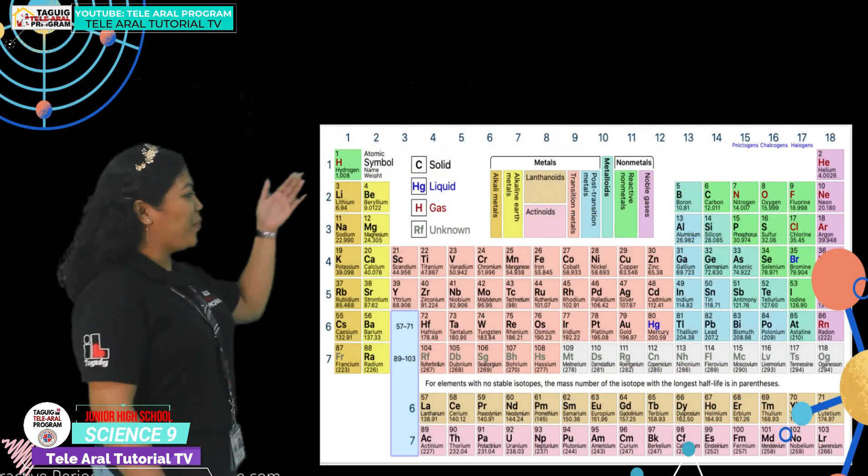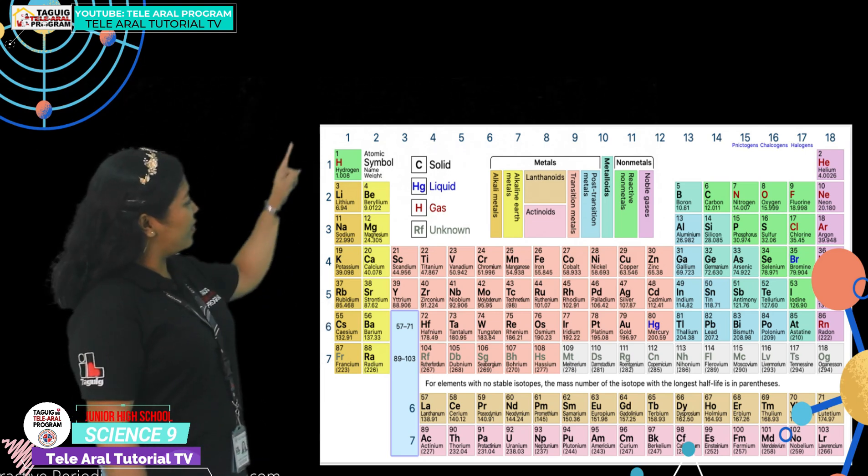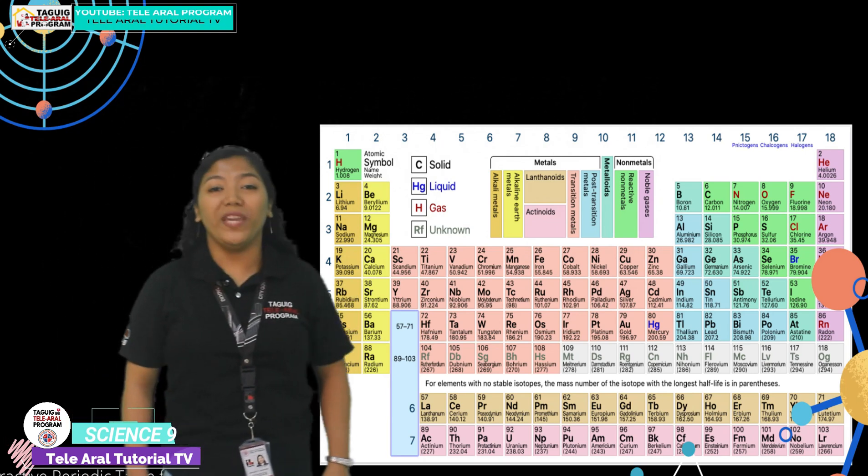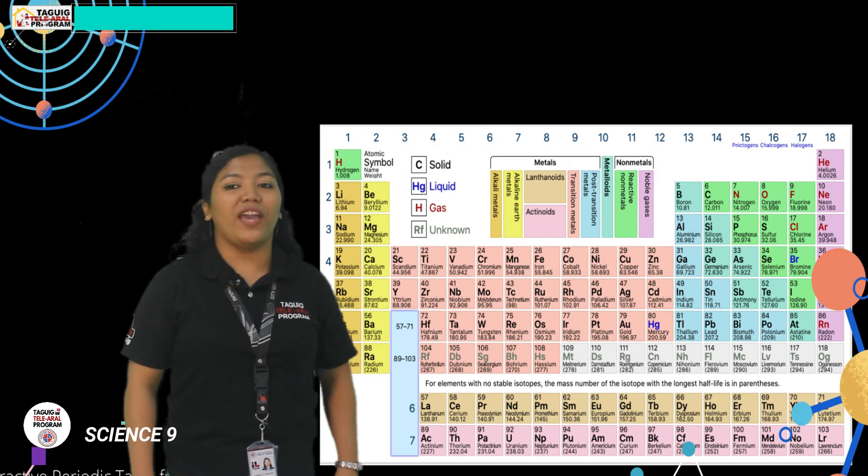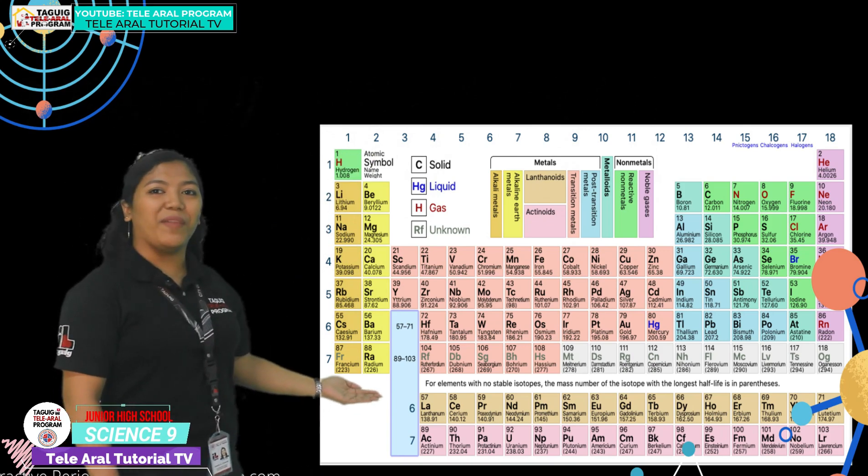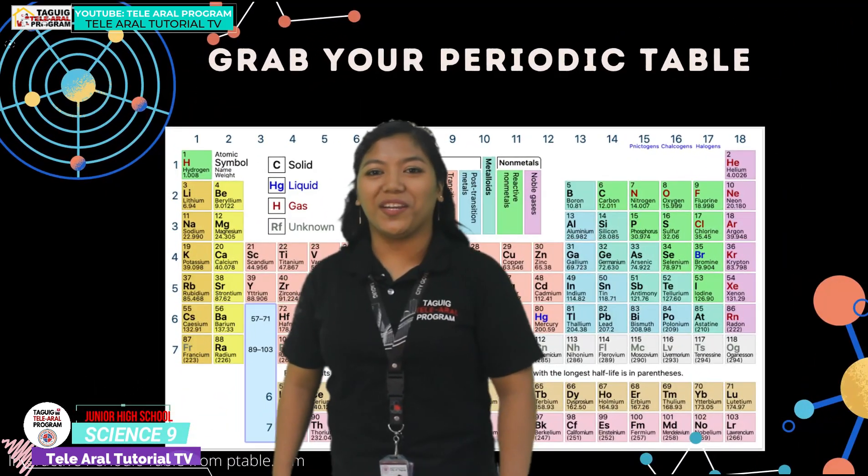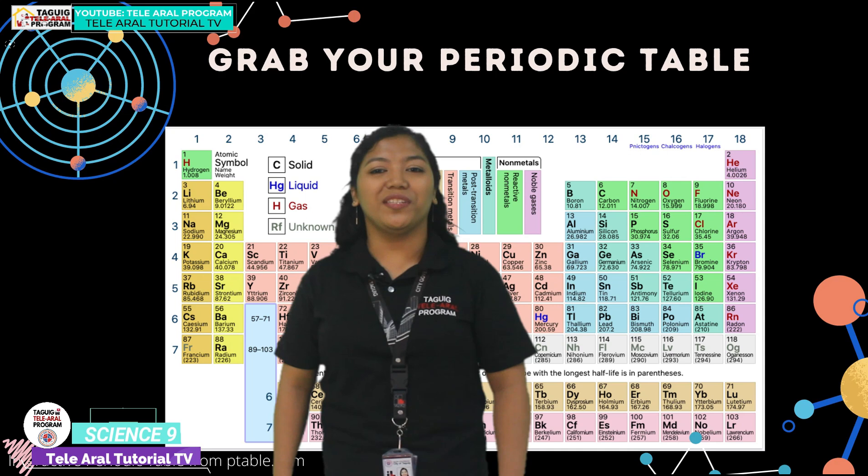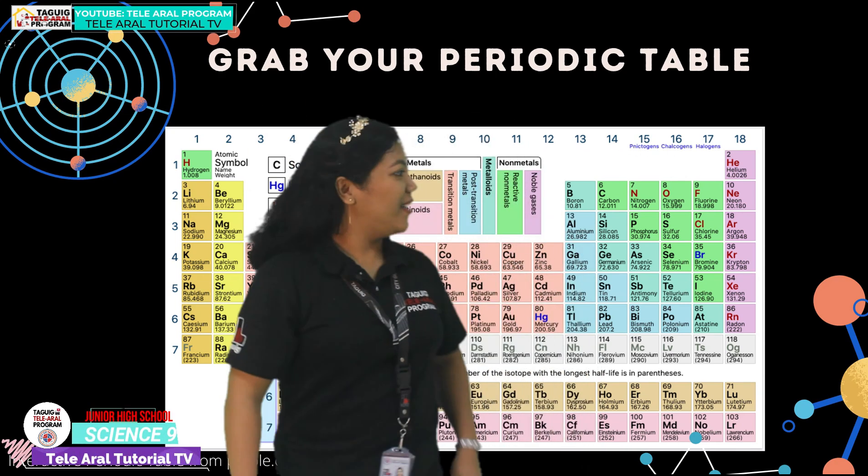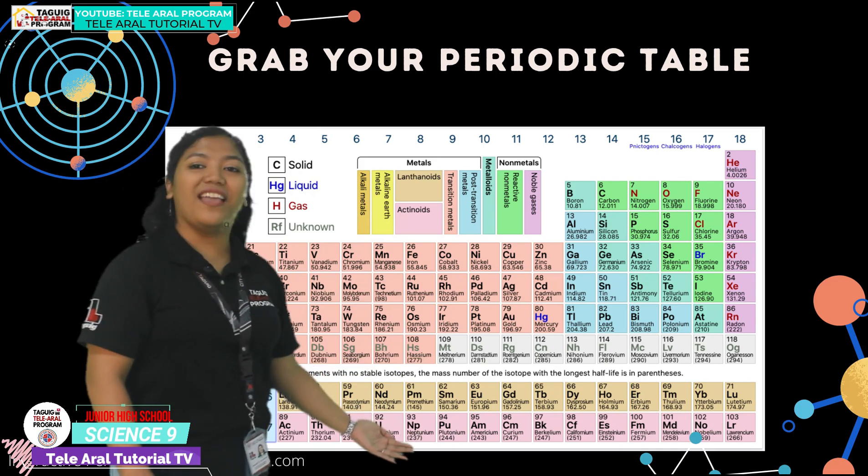Let's take a look at the periodic table. Do you know that it is also divided into different blocks? We assign numbers 1 to 7 to the energy level of the element, which is also evident to the period of the element to where it is located. Let's also look at the periodic table. Do you know that it is also divided into the different blocks? This is the S block, the P block, the D block, and lastly, the F block.